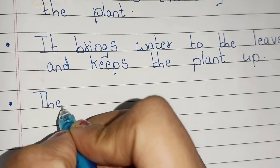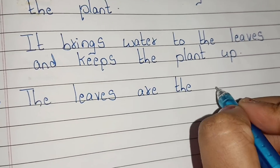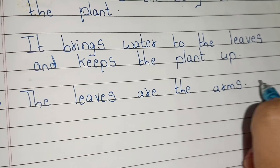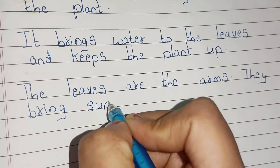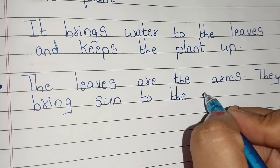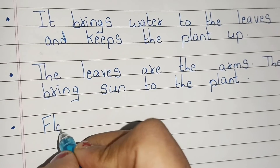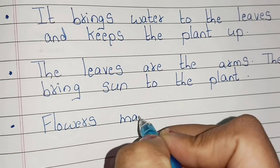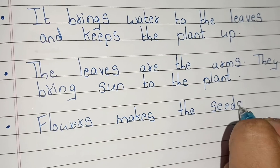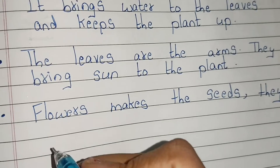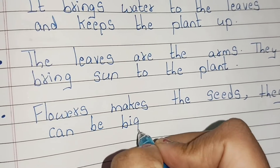The leaves are the arms. They bring sun to the plant. The seeds, they can be big or small.